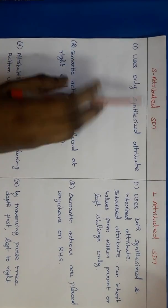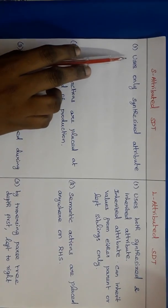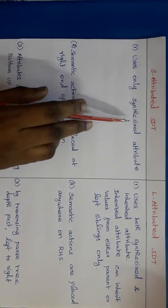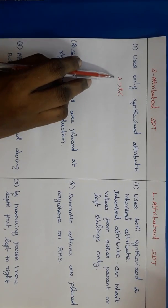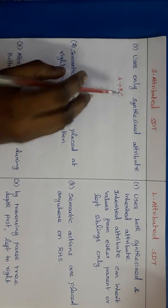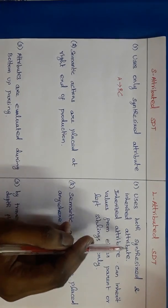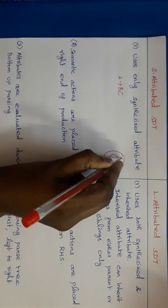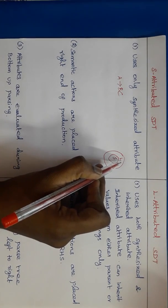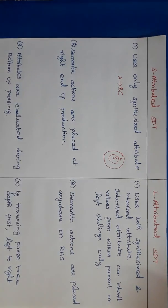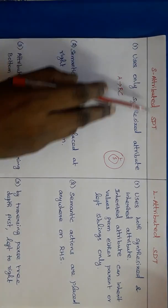There are two types of SDTs: S-attributed SDT and L-attributed syntax directed translation. S-attributed SDT uses only synthesized attribute — if A tends to BC, the value of the synthesized attribute is calculated from the children. All S-attributed SDTs are also L-attributed SDTs, but the reverse is not possible. S-attributed SDT means it has only synthesized attribute.